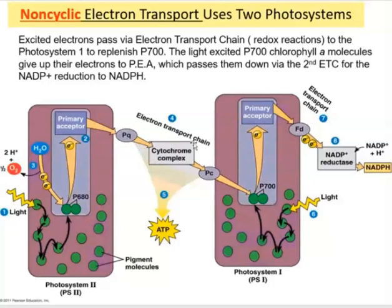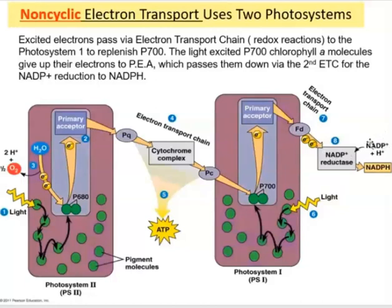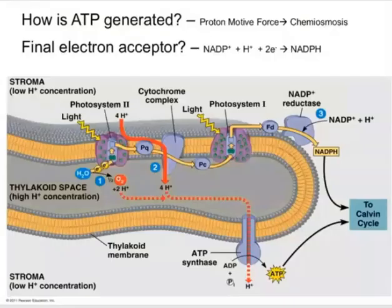As electrons travel down the ETC, the cytochrome complex — acting as a hydrogen pump — is activated and pumps hydrogen ions into the inside of the thylakoid, called the lumen. Electrons then arrive at photosystem 1, where light re-energizes them, sending them down a second electron transport chain. This time, they are passed on to NADP+, and NADP⁺ reductase facilitates the reduction of NADP+ into NADPH.